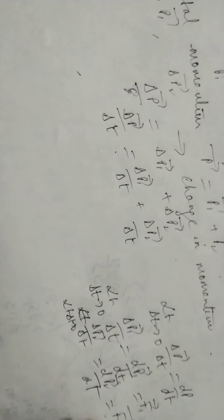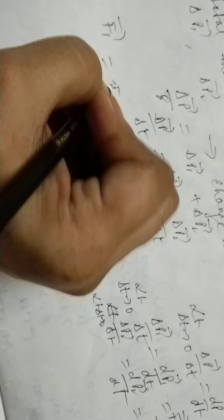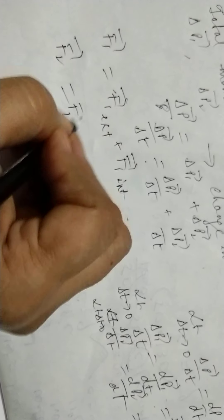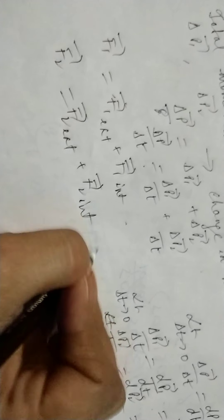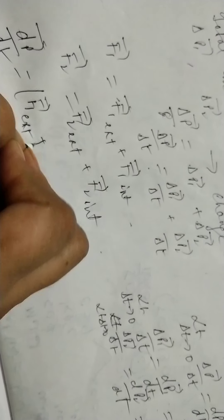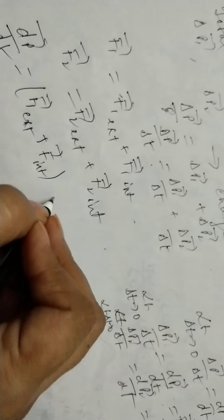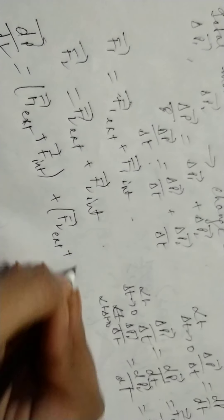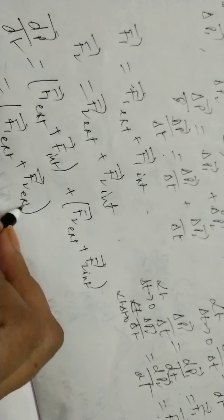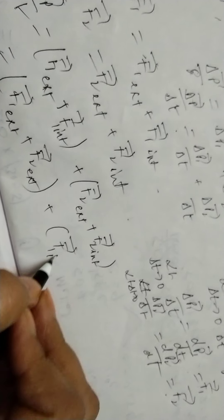Here, dp1/dt equals f1 vector and dp2/dt equals f2 vector. Now, f1 vector equals f1 external plus f1 internal, and f2 vector equals f2 external plus f2 internal. So dp vector by dt equals f1 external plus f2 external plus f1 internal plus f2 internal. We can separate these terms.